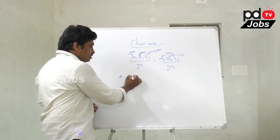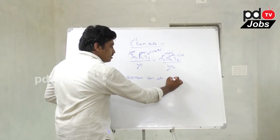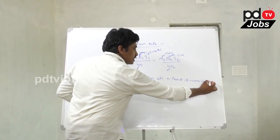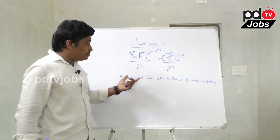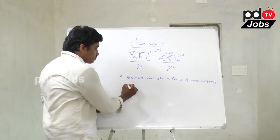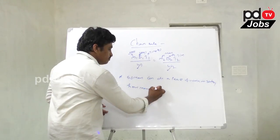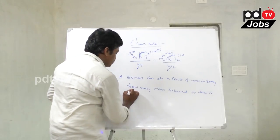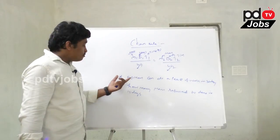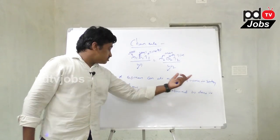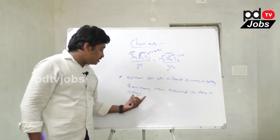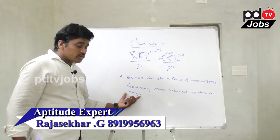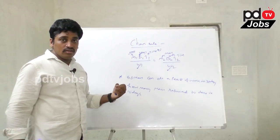Example one: 50 men can do a piece of work in 30 days. How many men are required to complete the same work in 15 days? This is the question.